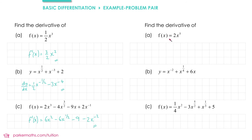In part a we have f(x) equals 2x to the 5. To find the derivative, multiply by the power: 2 times 5 is 10, and then reduce the power by 1 to get x to the power of 4. So f'(x) = 10x to the 4.